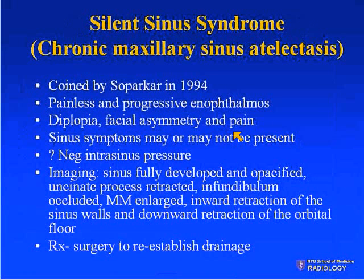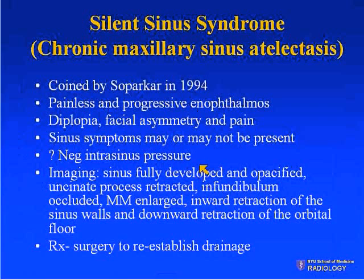Silent sinus syndrome, or chronic maxillary sinus atelectasis, was first coined by Sue Parker in 1994. These patients present with painless and progressive enophthalmos, and can have diplopia, facial asymmetry, and pain. They may or may not have sinus symptoms. The etiology is believed to be from negative intrasinus pressure. On imaging, the sinus is fully developed and opacified — as opposed to an underdeveloped sinus. The uncinate process is retracted and lateralized, the infundibulum tends to be occluded, the middle meatus is enlarged, and there is inward retraction of the sinus walls with resulting downward retraction of the orbital floor.